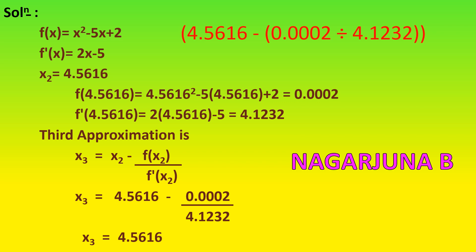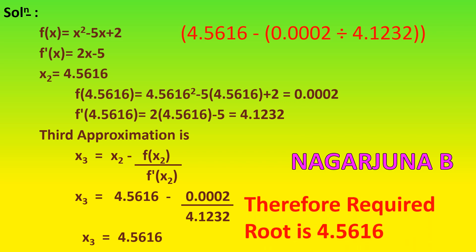Now you can observe that x2 is 4.5616 and x3 is 4.5616 — they are the same. So you can stop at this point. Therefore, the root of the equation x squared minus 5x plus 2 is 4.5616, which is correct to 4 significant digits after the decimal point — 5616 for x2 as well as x3 are the same, meaning it has converged up to 4 significant digits by using the Newton-Raphson method.